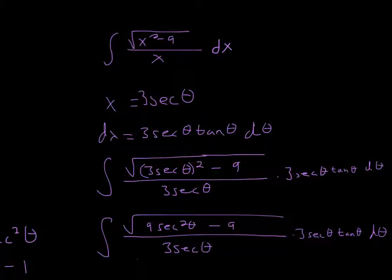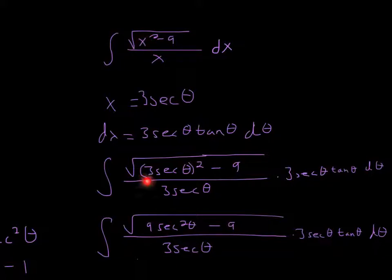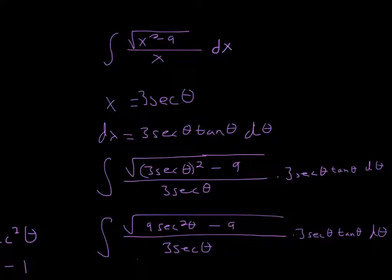When we take the derivative, dx is equal to 3 secant theta tan theta d theta. Now that we have the substitution, we can substitute it anywhere we see an x. So we replace x² with (3 sec θ)² to get 9 sec²θ − 9 inside the expression, replace the x factor with 3 secant theta, and replace dx with 3 secant theta tan theta d theta.